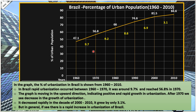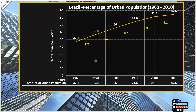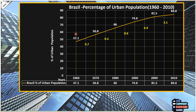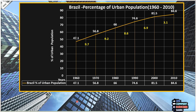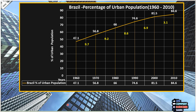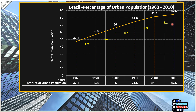The graph is moving in an upward direction, which indicates positive and rapid growth in urbanization. After 1970 we see a slight decrease in the rate of urbanization growth. The growth of urbanization decreases gradually, and it decreased most sharply in the decade 2000 to 2010, where the percentage grew by only 3.1%.